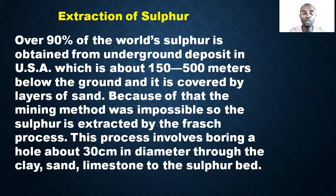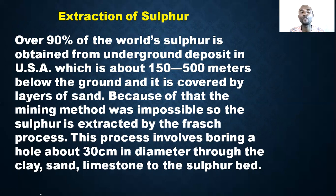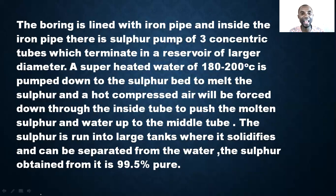The Frasch process involves boring a hole about 30 cm in diameter through clay, sand, and limestone to the sulfur bed. The boring is lined with iron pipes. Inside the iron pipe, there is a pump assembly of about three concentric tubes, which terminate in a reservoir of larger diameter.